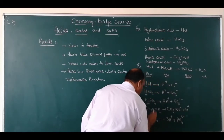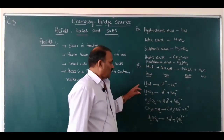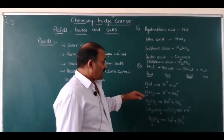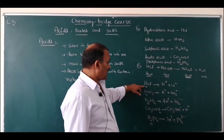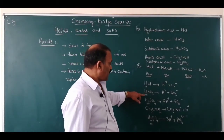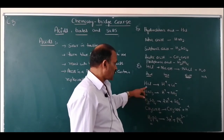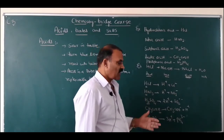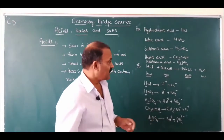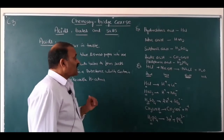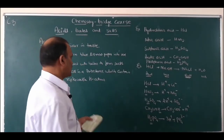So an acid is a substance which contains replaceable hydrogen atoms. These are the preliminary definitions of an acid.